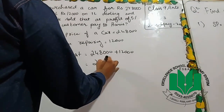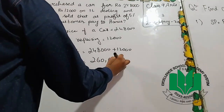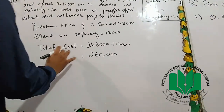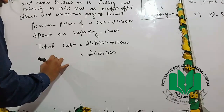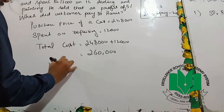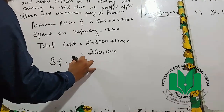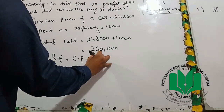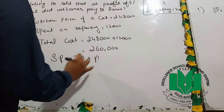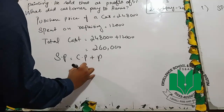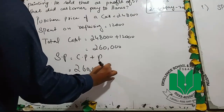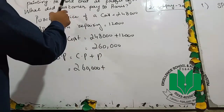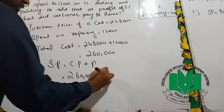$2,60,000. This is my cost price. Sell price is equal to cost price plus profit. Cost price is $2,60,000. Profit is $5,000.